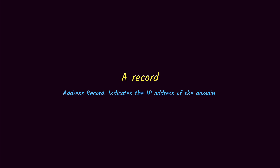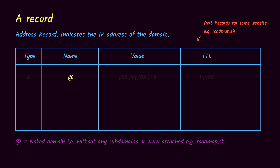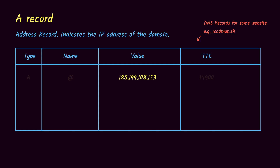First of all we have the A record. It stands for the address record and it refers to the IP address of the server to which this domain points. Let's say we have a domain called roadmap.sh. In our first column we have the type which is the A record, then we have the name which is '@', referring to the root domain roadmap.sh. Then we have the IP address of the server as a value, and then we have the TTL or time to live, which is the caching time for this record in seconds — meaning the IP address can be cached at the client or any other places for that number of seconds.